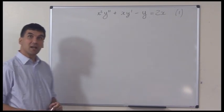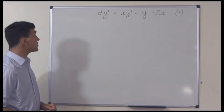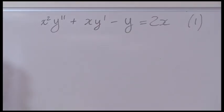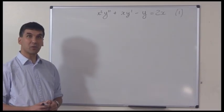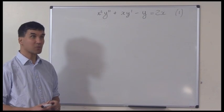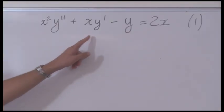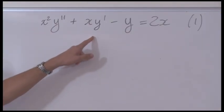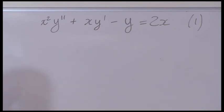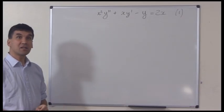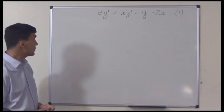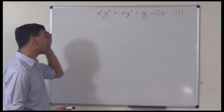As an example, I'll take this equation here, which I've written up and labelled equation 1. It is x squared times y double prime — remember, y double prime means d squared y by dx squared — plus x times y prime, so x times dy by dx, minus y, equals 2x. Our task is to find the solution of y as a function of x.